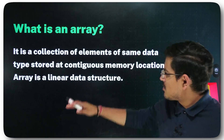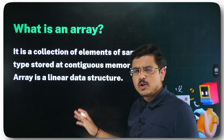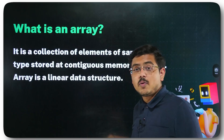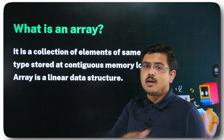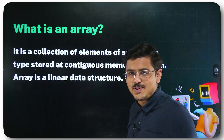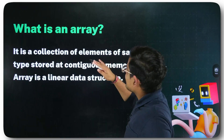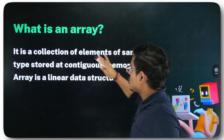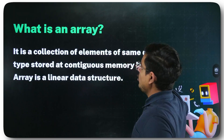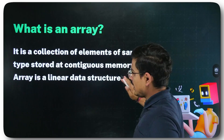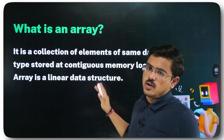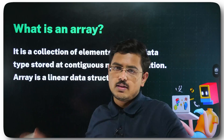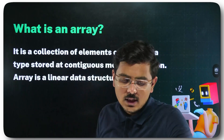If I just read the definition of arrays you'll get 30-50% of it, but when I give an example you'll get 100%. It's very easy. An array is a collection of elements of the same data type stored at contiguous memory locations. Array is also a linear data structure — these are two different facts about arrays: one is the definition and another is a property.